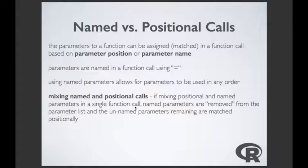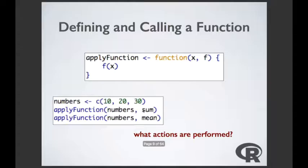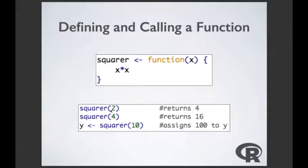Now we'll talk about named versus positional calls. There are named calls using the parameter names specifically, or we can just have them in position. In our example, numbers followed by sum — it knew numbers was x and sum was f — that's a positional call. With only one position in squarer, I could have also said x=2 and named it specifically.